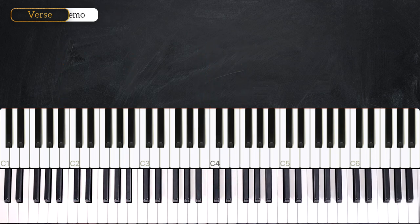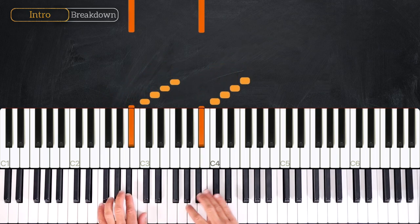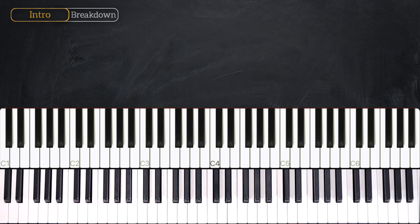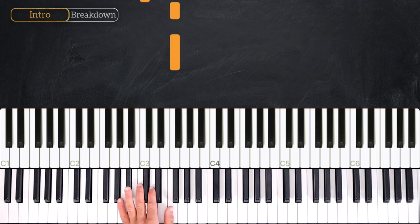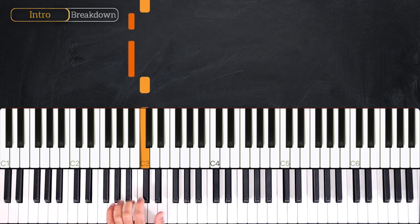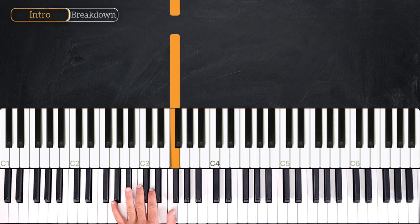Alright guys, in this first part we are going to learn the introduction. So we are in the key of F major, so we have a B flat. Let's start with the introduction. The left hand is going to play this: one, two, three, four, two, three, four. So it's quite easy, we go from F, we repeat it.